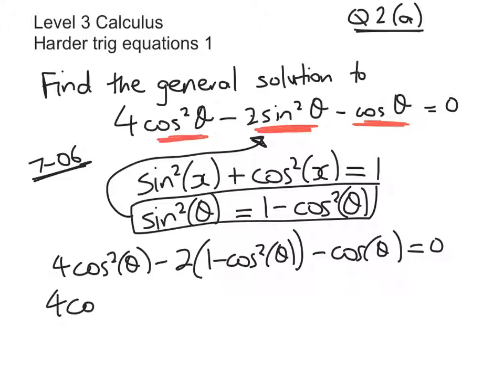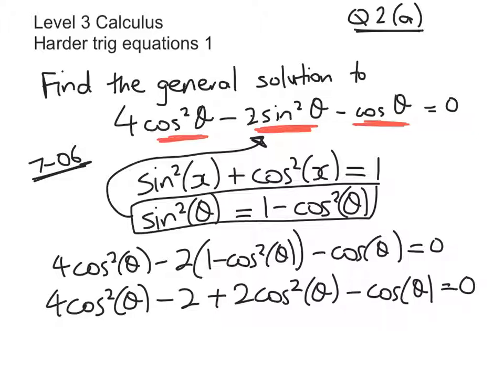Now we expand that out, and you should be starting to see that it is going to fall out into a nice quadratic. So we've lost the sine term and we've got a constant in there, which is also good for an easy quadratic. So let's see. Well, I've got 6cos²θ - cosθ - 2 = 0.